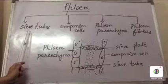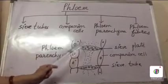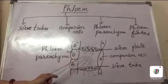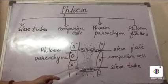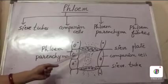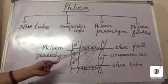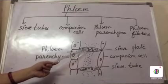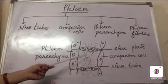Now let us study in detail about the sieve tubes. Sieve tubes consist of specialized elongated cells. They lack a nucleus. The ends of these cells are connected with other sieve tube members by sieve plates. These sieve plates have pores or perforations that help in the transport of food material between them.